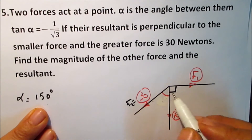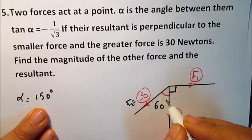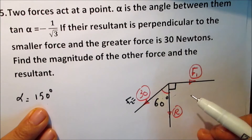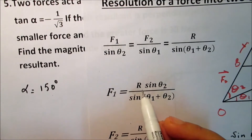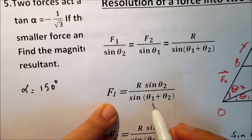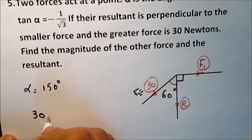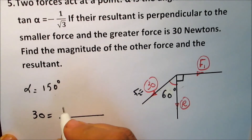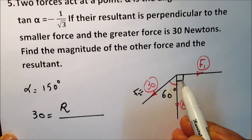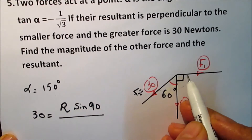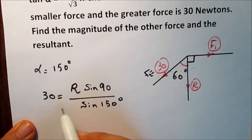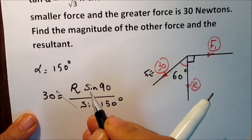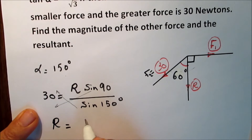The angle between F2 and R is 150 minus 90, which equals 60 degrees. Remember the rule: F1 equals R times sine of theta 2, divided by sine of the sum of the two angles (theta 1 plus theta 2). So F2, the 30 N force, equals R times sine 90 over sine 150 degrees.